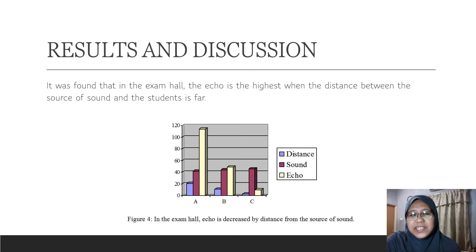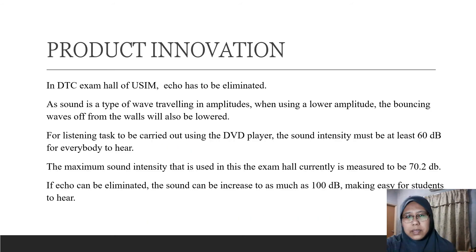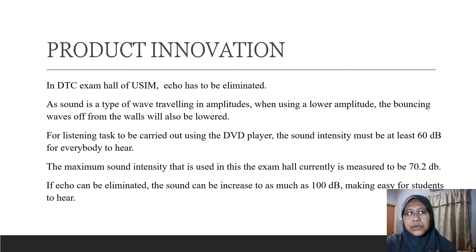On the physics side, it was found that in the exam hall, echo is highest when the distance between the source of sound and the students is far, and lowest when they are near. Echo has to be eliminated, and in order for everybody to hear, we must increase the volume of the listening material. So, how are we going to do this?